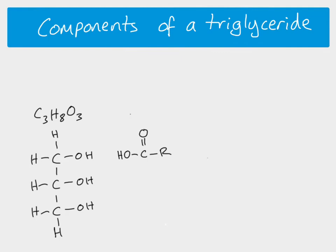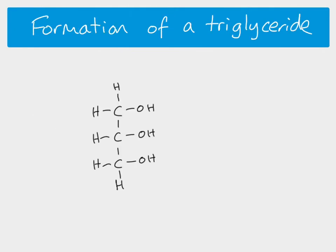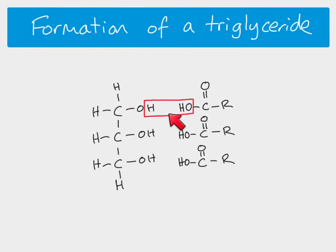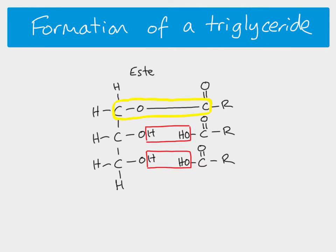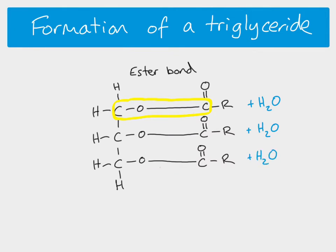There are three fatty acids in a triglyceride. To bond the fatty acids with glycerol, the hydroxyl group of the fatty acid and the hydrogen from the hydroxyl group of glycerol are removed as a water molecule. This forms a bond called an ester bond or ester linkage — going from carbon to oxygen to carbon. Because a water molecule is removed, this is a condensation reaction.